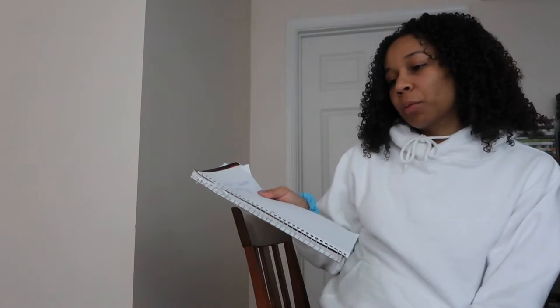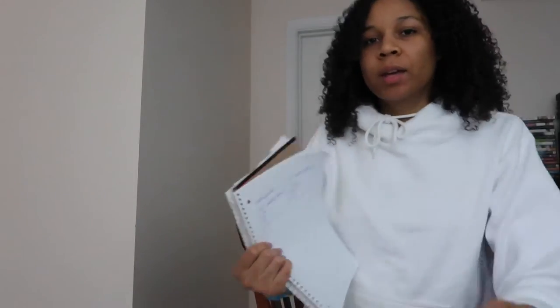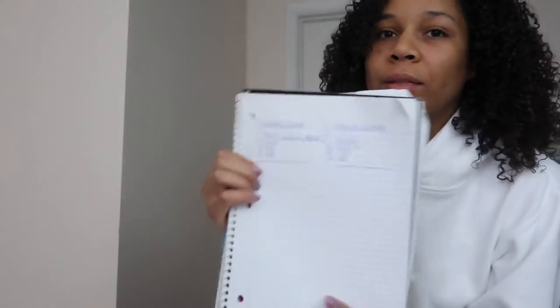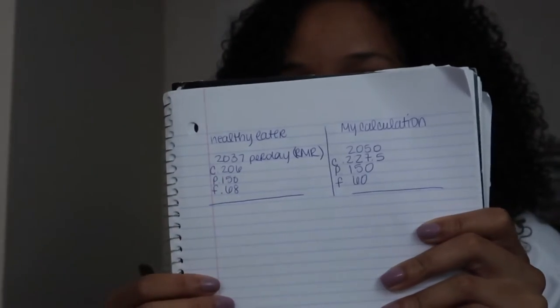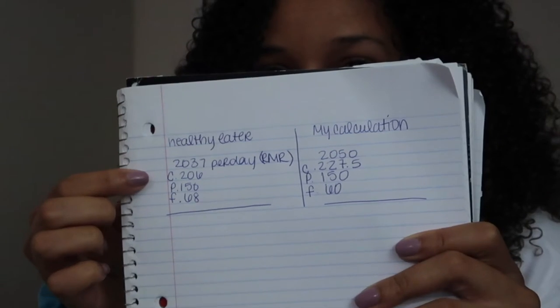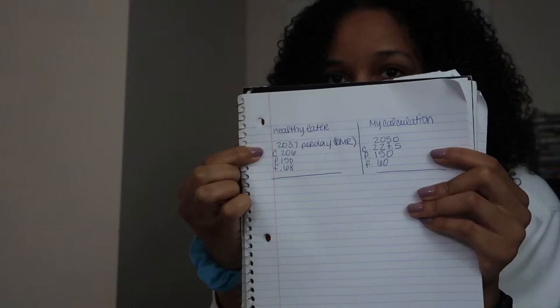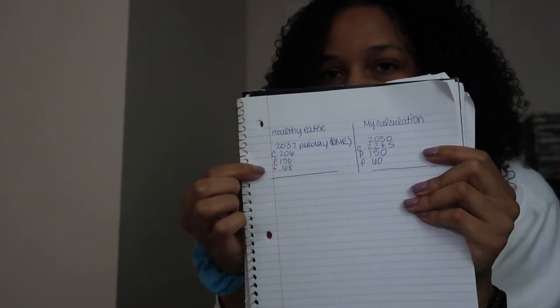So I went onto a website called Healthy Eater, and I put in my requirements so that they could also calculate and track my macros and count it for me. And what they came up with was very close to what I came up with. So they came up with these macros. You can see that is them. And then these are my calculations, which they're not that much off. They're very close, very similar. So the point of me doing that was just to check and make sure the information that I had from me learning how to calculate my macros was accurate to what the websites and what would show up online if I went that route.